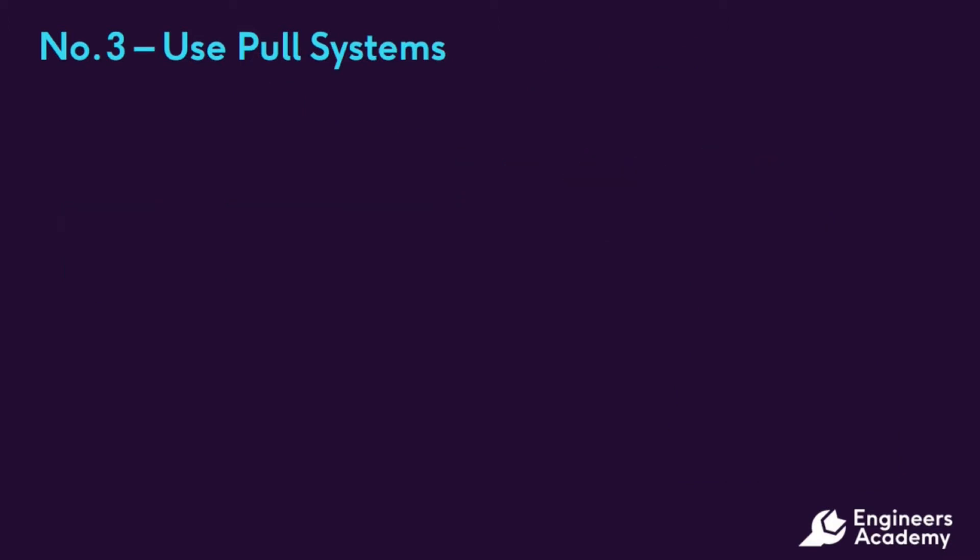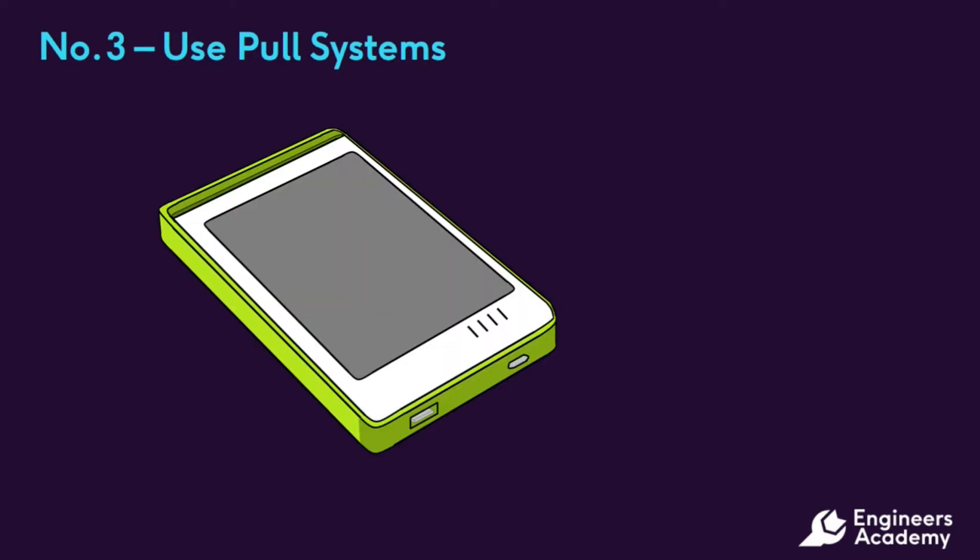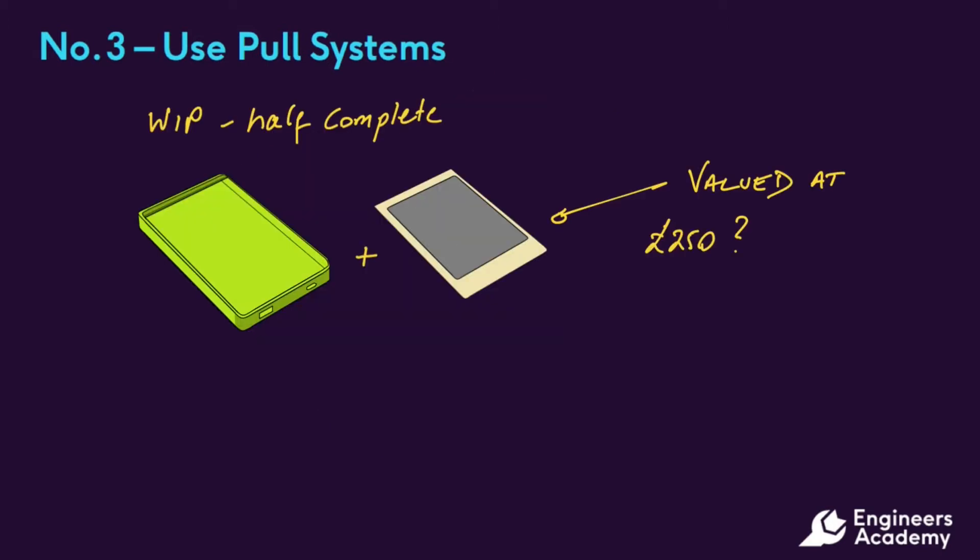Let us consider an example where a process produces mobile phones with a finished product value of £500. If we have half-completed phones in the work in progress, they will be valued at half the value, £250 in this case. So the operation may be assessed as doing just as well, producing twice the amount of phones half-finished as the full amount fully finished.